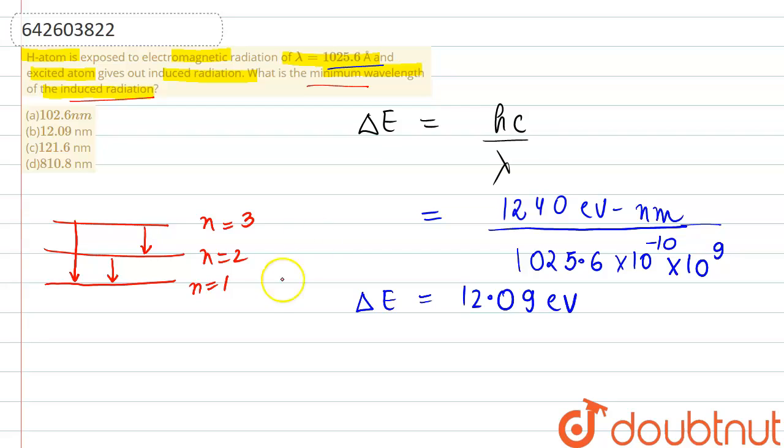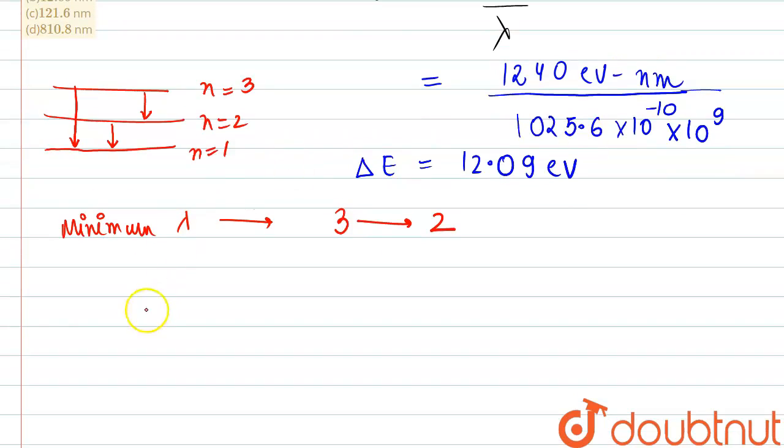minimum wavelength will be there in the case of transition from third energy level to second energy level. So we can calculate it using the same expression.